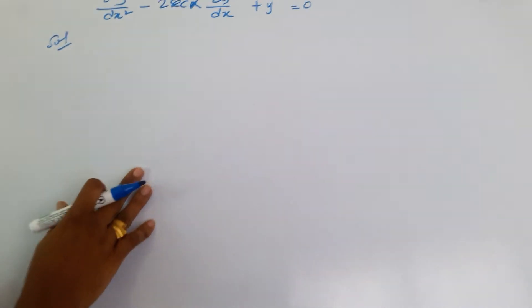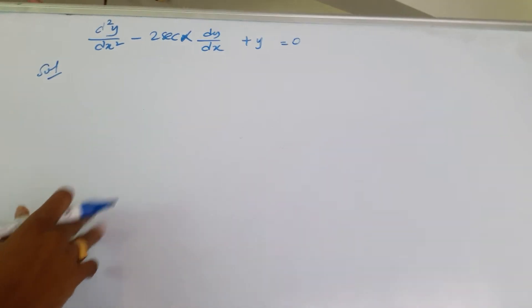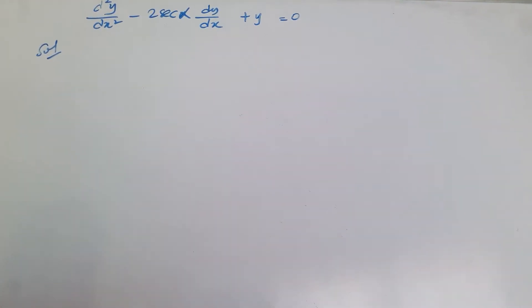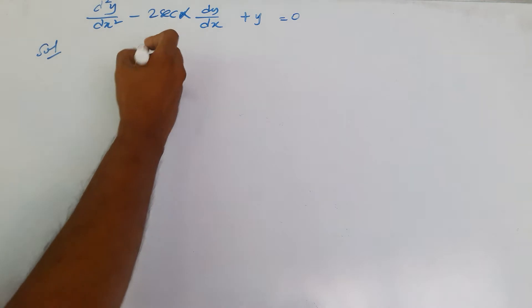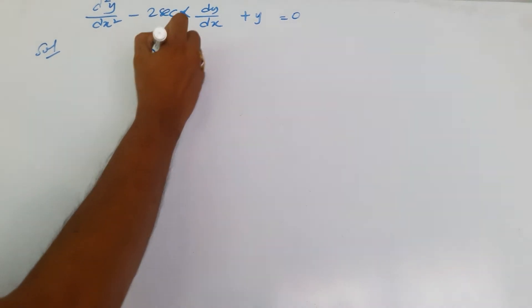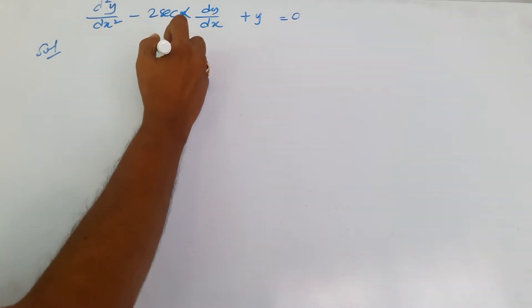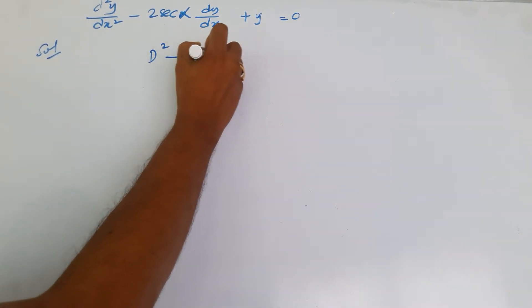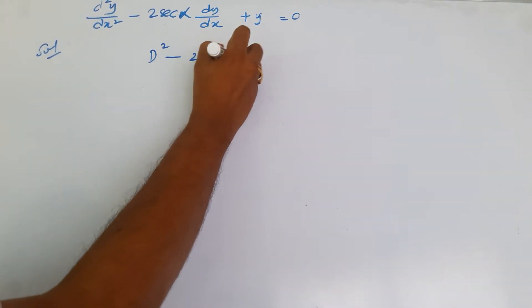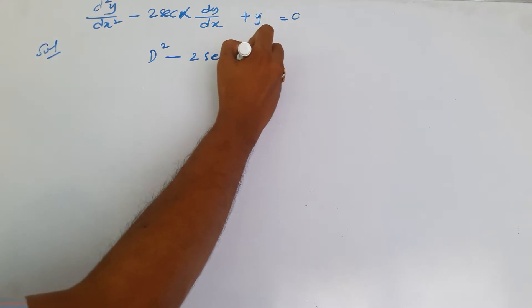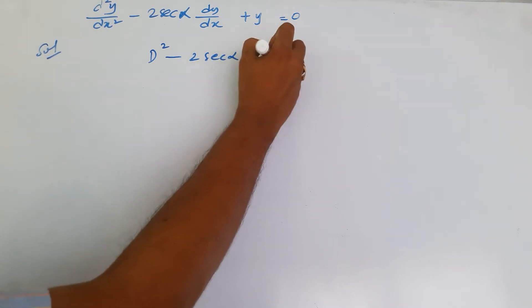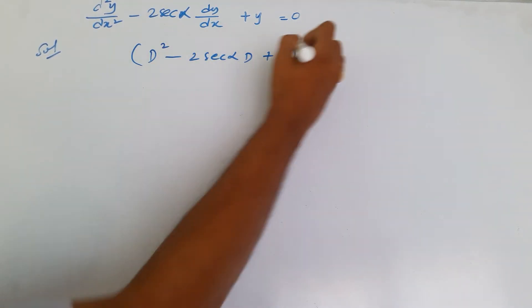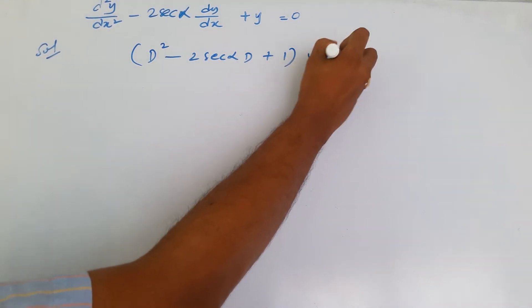Let us try to solve this differential equation, which is a homogeneous equation. Let us write it in this form: (D² - 2·sec(α)·D + 1)y = 0.